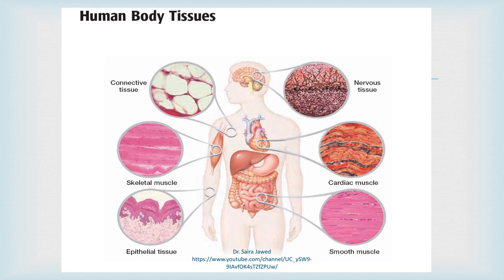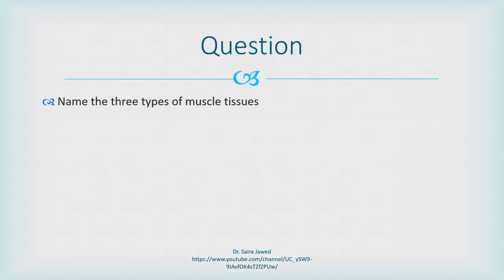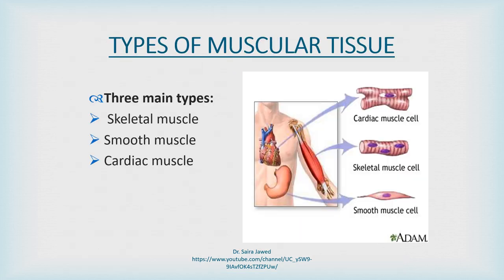There are four basic types of tissues present in the human body: nervous tissue, muscle tissue, epithelial tissue, and connective tissue. The three types of muscular tissues are cardiac muscle, skeletal muscles, and smooth muscles.